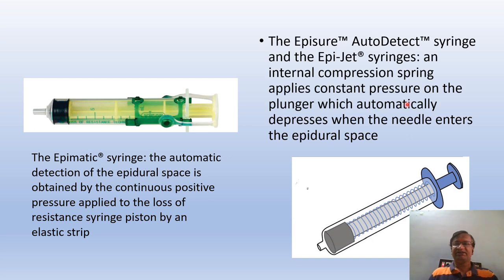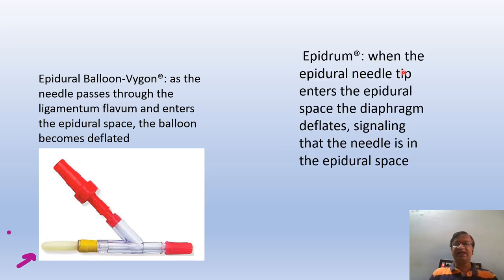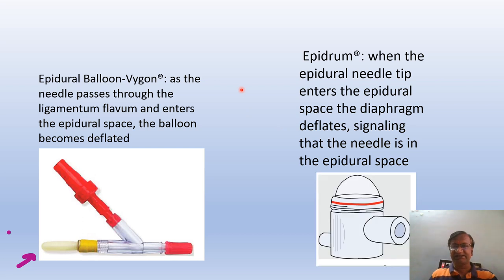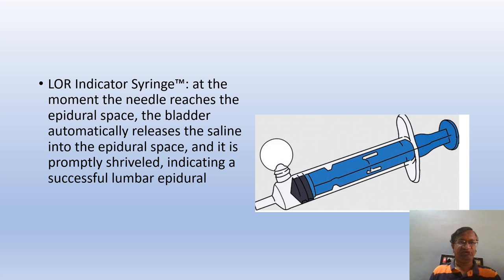There is also the Episure auto-detect, which has a spring — as soon as it enters, the spring collapses. The epidural balloon device works as follows: as the needle passes through the ligamentum flavum, the balloon collapses or deflates, indicating that the epidural needle tip has entered the epidural space. The LOR indicator syringe works such that at the moment the needle reaches the epidural space, the bladder releases saline into the epidural space. We have already discussed why the epidural space is negative in our earlier video on epidural basics.